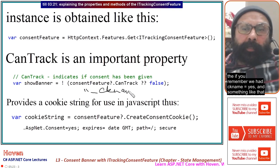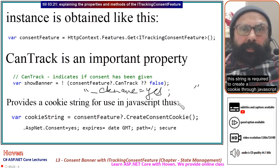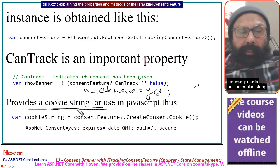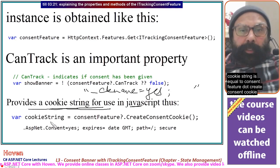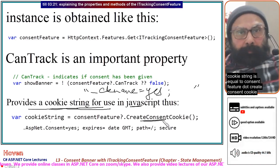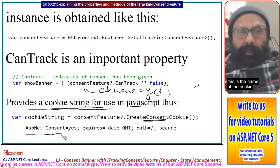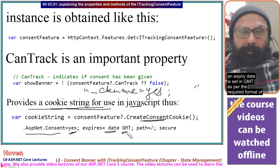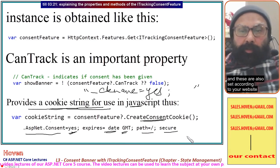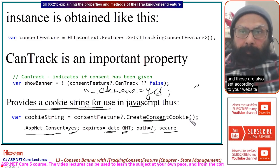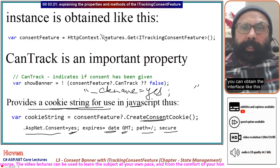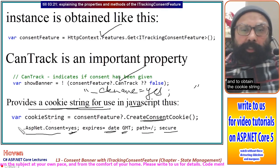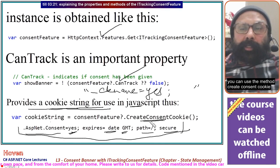If you remember from the previous tutorial, we needed a cookie string — something like ck name equals yes. This string is required to create a cookie through JavaScript. You can obtain the ready-made built-in cookie string using cookieString = consentFeature.CreateConsentCookie(). It creates a string with the cookie name, a value set internally by ASP.NET Core, an expiry date in GMT, and other attributes set according to your website. Use this method to get the cookie string to use in JavaScript.